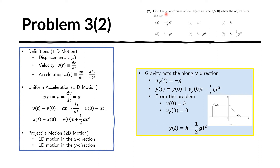In problem 2 we are interested in the y-coordinate. Because we can decompose the motion into a 1D motion in the x direction and a 1D motion in the y direction, we can analyze the y-coordinate by looking at what happens along the y-axis. In this case gravity is acting on the object along the y direction, and the acceleration due to gravity is given by negative g. The negative sign indicates that gravity is pulling it downwards toward the negative y-axis.